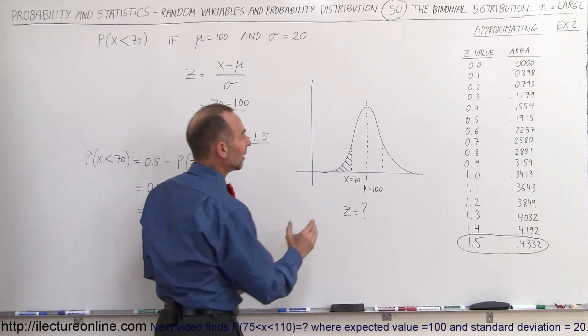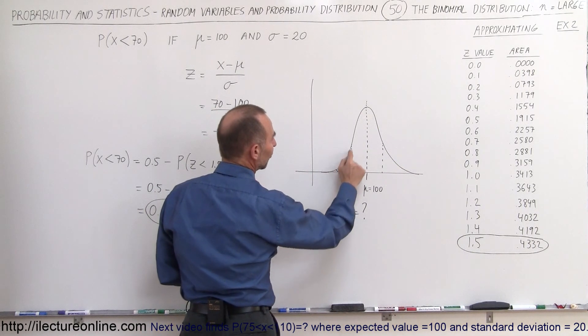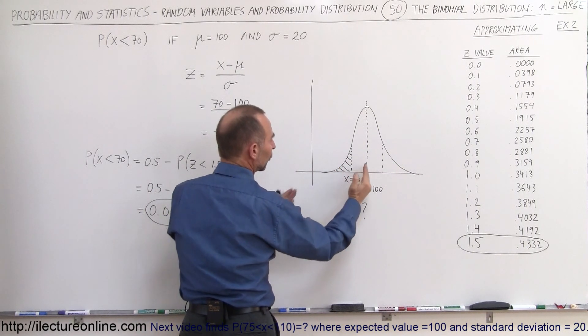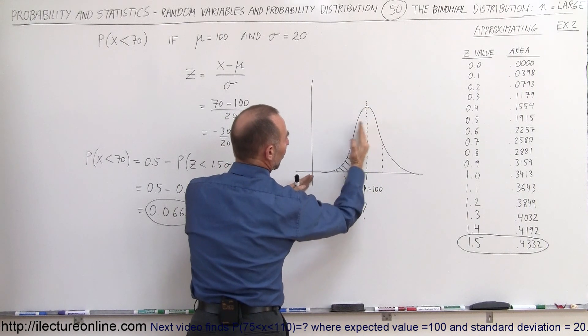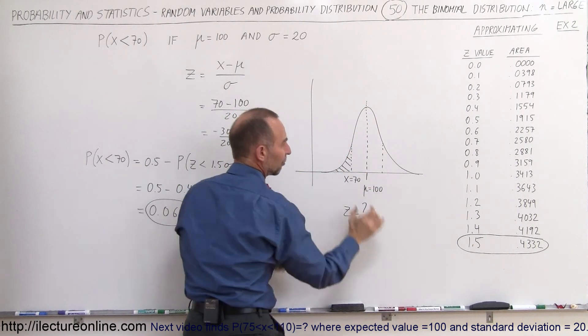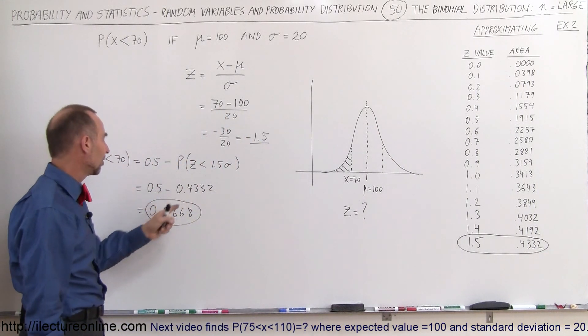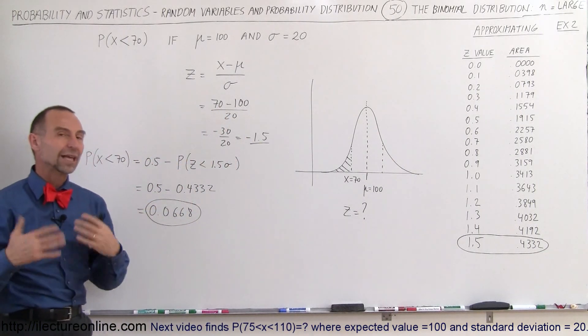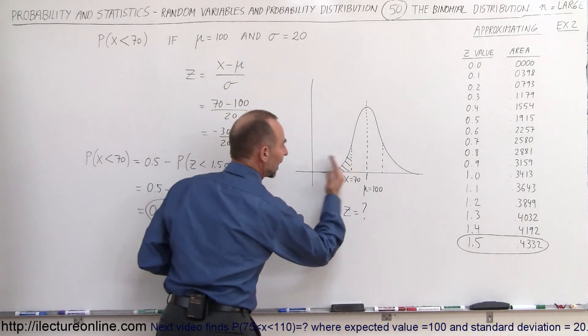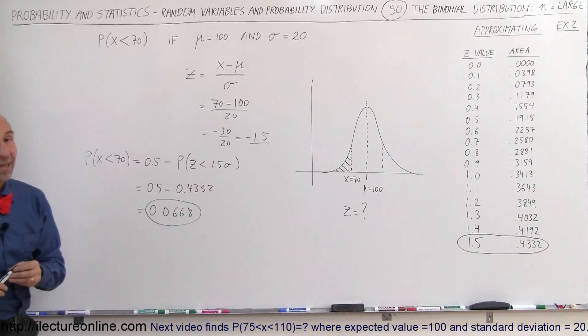And then you look at the graph and then you realize to get this value right here, to get this area under the curve, you take half the area right here, which is one-half, and subtract this portion from it, which is found from the table right there. So it's 0.5 minus this will give you the probability or the area under the curve to the left of x equals 70, and that's how we do that.